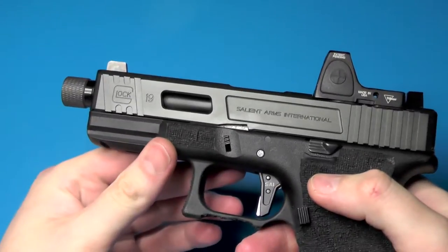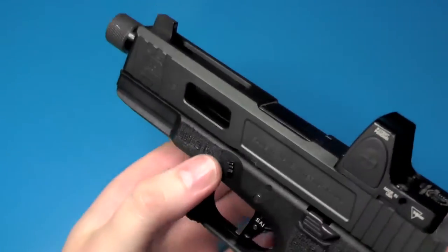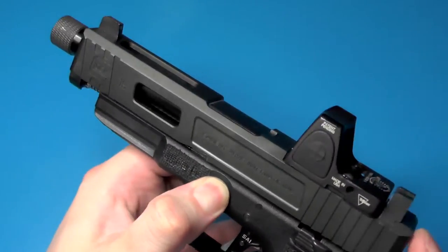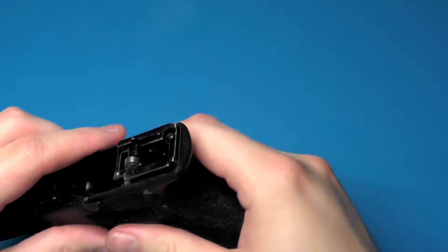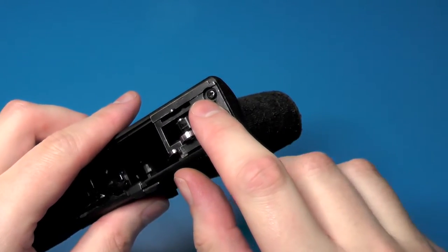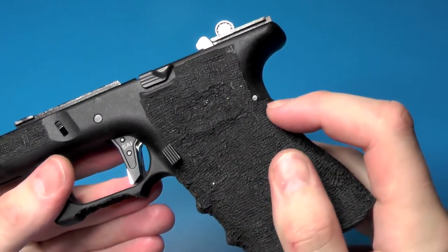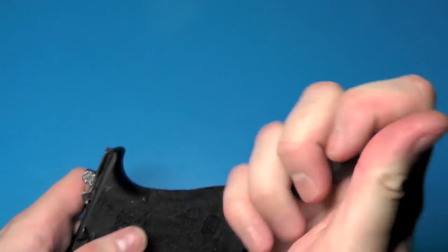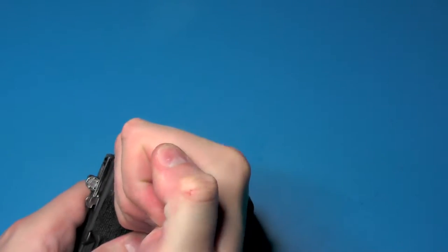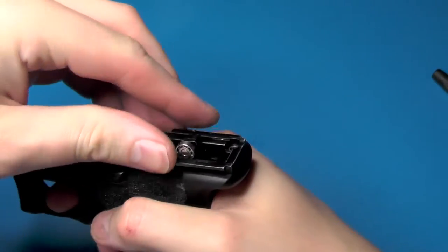Anyway, drop the magazine. I'm going to take off my light just to make it a little easier. And we're going to rack it, pull down on the tabs, pull the slide off, fire the hammer. Next we're going to be removing the hammer housing screw.